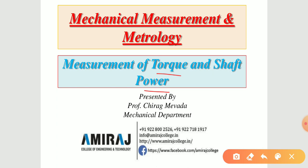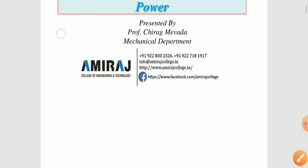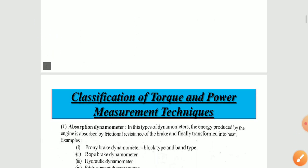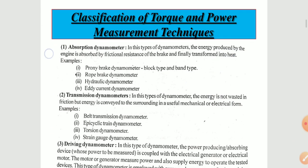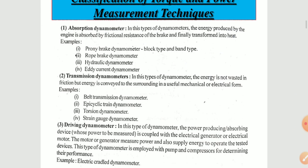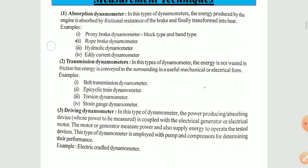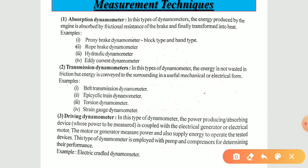The classification of torque and power measurement techniques is given here. There are basically three types of dynamometer: absorption dynamometer, transmission dynamometer, and driving dynamometer.